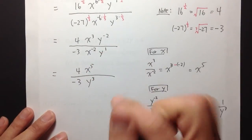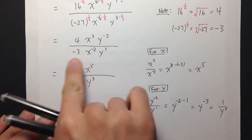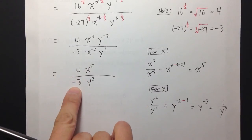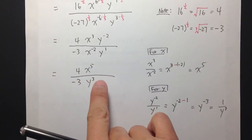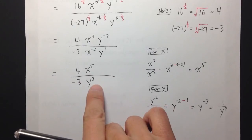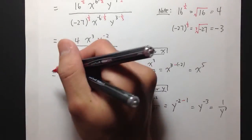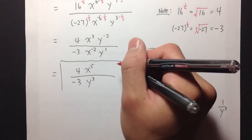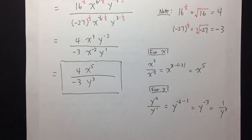So as we can see, we simplified the fractions and all the exponents are positive, and we don't have any other like terms that need to be combined. So there we have it — this is the answer that we are looking for.